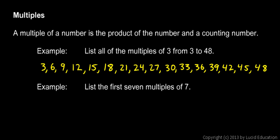Now notice the definition of a multiple up here. A multiple of a number, and these are all multiples of 3, is the product of a number and a counting number. So this first one here, 3, is 3 times 1.